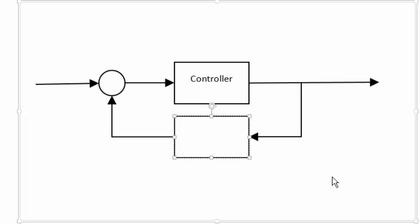I'm going to add more text to the other rectangle. I'll click into it and type 'Feedback Sensor.' Notice how the text wrapped — I did not press the Enter key. When the text needs to wrap or doesn't fit, it automatically wraps to the second line, which makes it very easy to enter text. I'm going to click off to deselect.